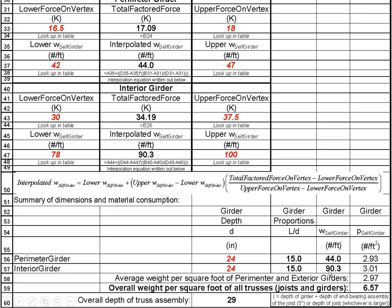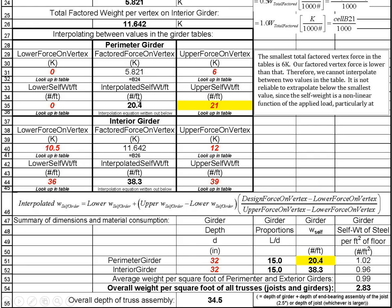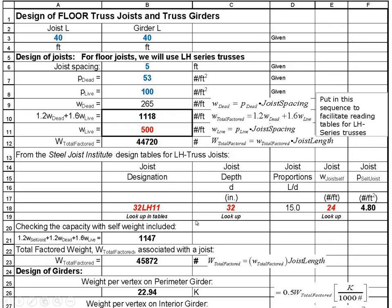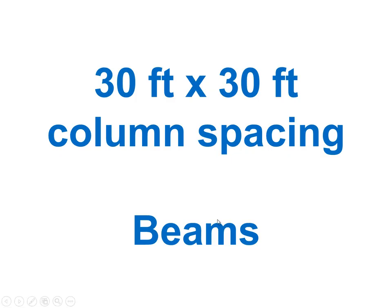For the 40-by-40 column grid: for the roof we chose a 22k6 joist at 9.2 pounds per foot, the perimeter roof girder was 20.4, and the interior roof girder was 38.3 pounds per foot. For the floor, the joist was a 32LH11 at 24 pounds per foot, with the perimeter girder at 78.4 and the interior girder at 154.7 pounds per foot.